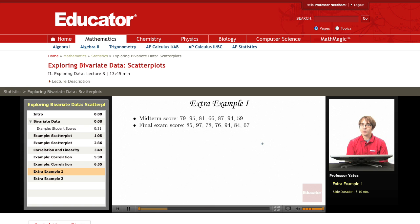Welcome back to educator.com. We're now going to look at a few extra examples to calculate the correlation between two variables. So let's say I have these midterm scores. I'm going to make the midterm score be my x and my final exam score be my y. So what we want to do is we want to find the correlation.